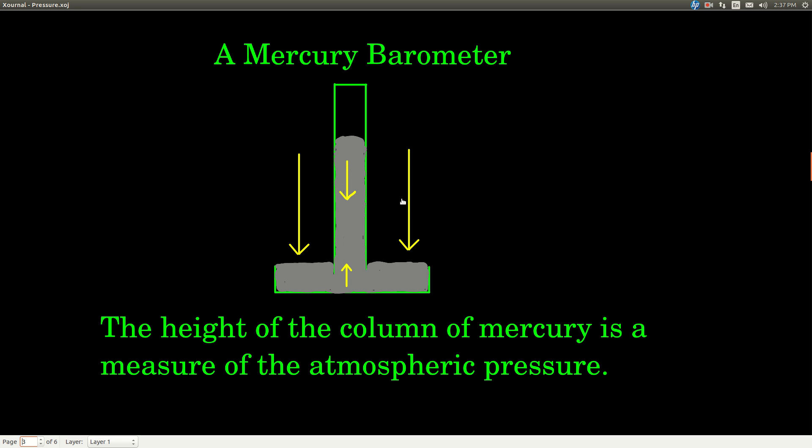As the pressure of the atmosphere increases, the height of the column will go up. As the pressure of the atmosphere decreases, the height of the column of mercury will go down. So the height of a column of mercury is a measure of atmospheric pressure. It's one of the units called millimeters of mercury or inches of mercury.